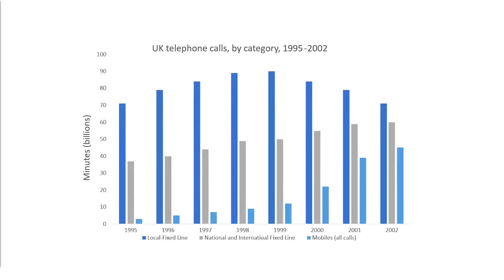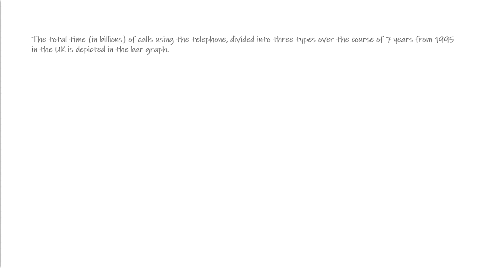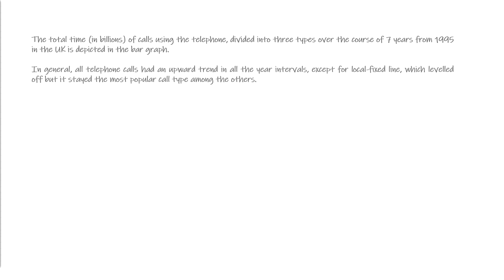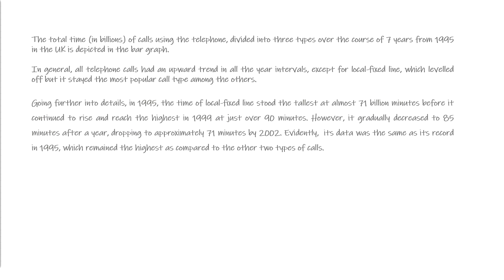And this is how we write a band 9.0 bar graph dynamic report: 'The total time in billions of calls using the telephone, divided into three types over the course of seven years from 1995 in the UK, is depicted in the bar graph. In general, all telephone calls had an upward trend in all the year intervals, except for local fixed line, which leveled off, but it stayed the most popular call type among the others. Going further into details, in 1995 the time of local fixed line stood the tallest at almost 71 billion minutes, before it continued to rise and reach the highest in 1999 at just over 90 minutes.'